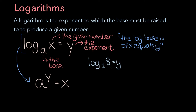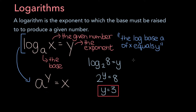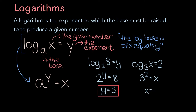We can transform this logarithmic equation into its exponential form, and it becomes 2 to the y equals 8. We know 2 cubed equals 8, so y must equal 3. Now let's say you had a slightly different problem: the log base 3 of x equals 2. You can transform this into its exponential form and it becomes 3 squared equals x, so x equals 9.